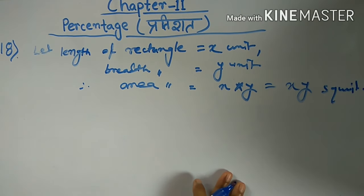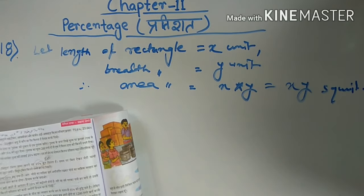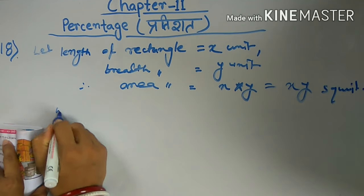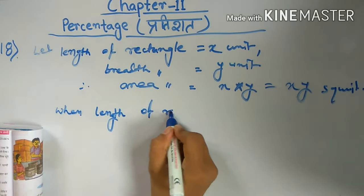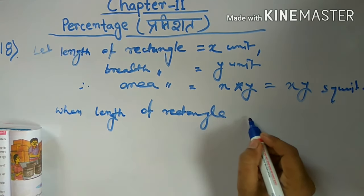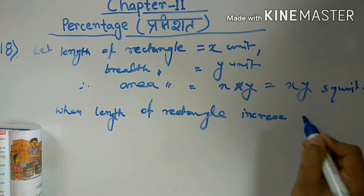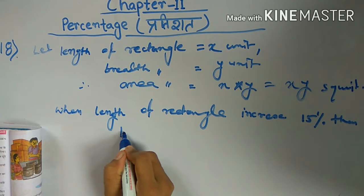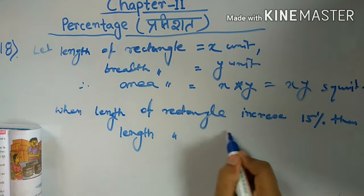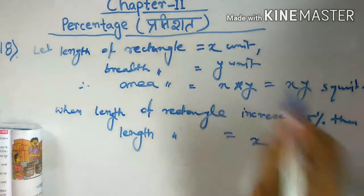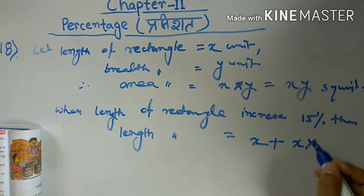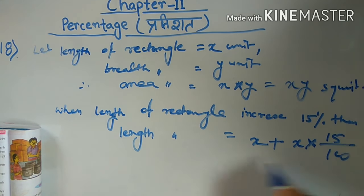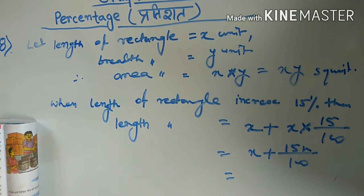Now, the length of the rectangle is increased by 15%. So we write: when length of rectangle increases by 15%, the new length equals the original length x plus 15% of x. That is, x plus x into 15 by 100, which gives x plus 15x by 100.